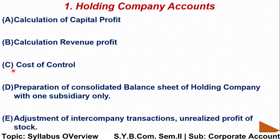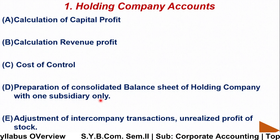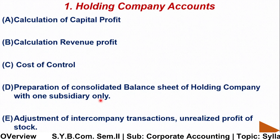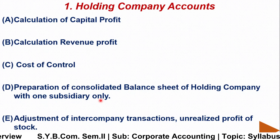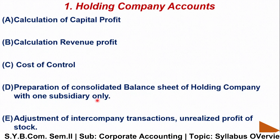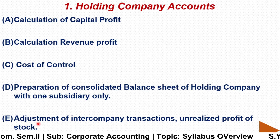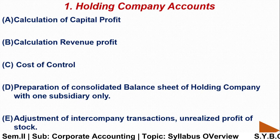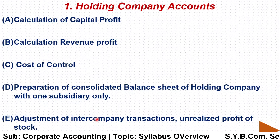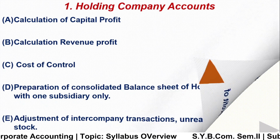We also calculate the cost of control and prepare a consolidated balance sheet of the holding company with one subsidiary. For example, if Company A holds Company B, we prepare a consolidated balance sheet of A with subsidiary B — a combined balance sheet of the holding and subsidiary company. We also study the adjustment of intercompany transactions and unrealized profit on stock.